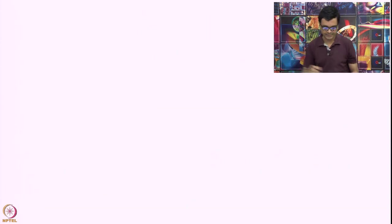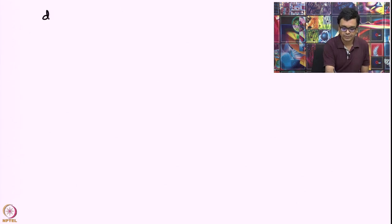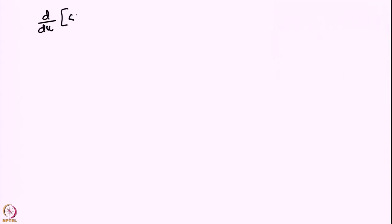We employ a very similar procedure. We want d/du of CN(u). Remember that k is being held constant, so I am replacing the partial derivative with an ordinary derivative. So d/du of CN(u) is basically d/du of x/a, which is the definition of CN(u).